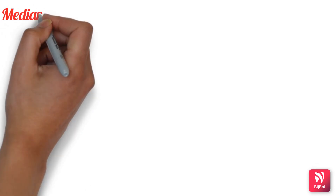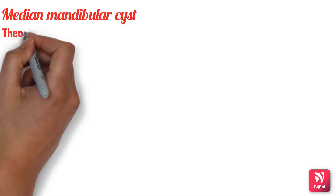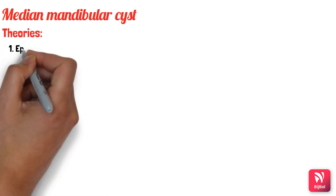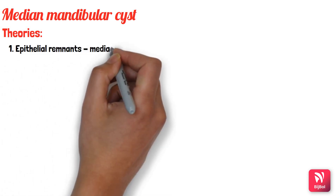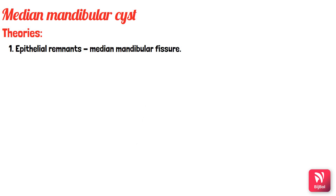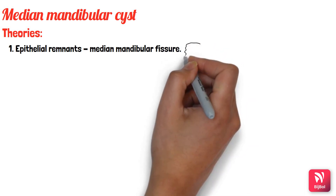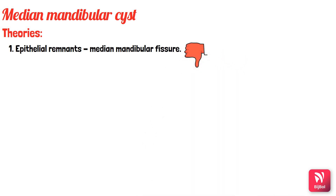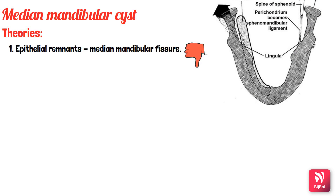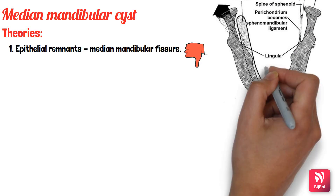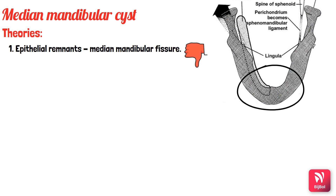The median mandibular cyst is a very rare cyst that occurs in the midline of the mandible. The first theory proposes it is formed from epithelial remnants entrapped in the median mandibular fissure during fusion of bilateral mandibular arches. However, this theory is disapproved by many because the mandible normally develops as a single bilobed mesenchymal proliferation — meaning there is no fusion, and therefore no epithelial remnants, questioning the existence of this cyst.